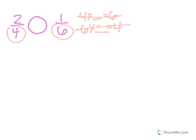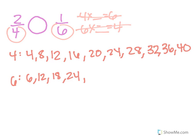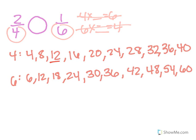What I'm going to do is list out my multiples for 4 and for 6. So I go: 4, 8, 12, 16, 20, 24, 28, 32, 36, 40. Then for 6: 6, 12, 18, 24, 30, 36, 42, 48, 54, 60. Then I can go through and find the common multiples. I have 12 and 12, and 36 and 36.